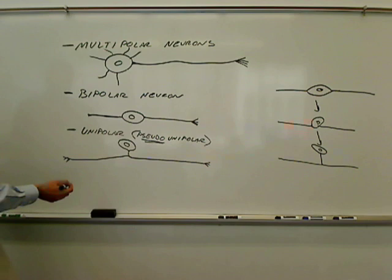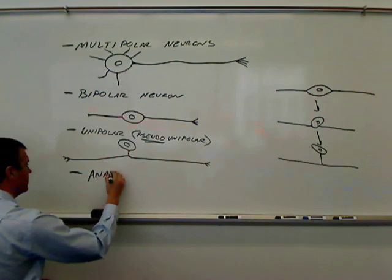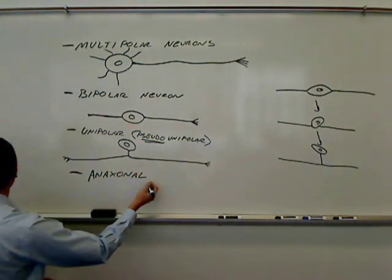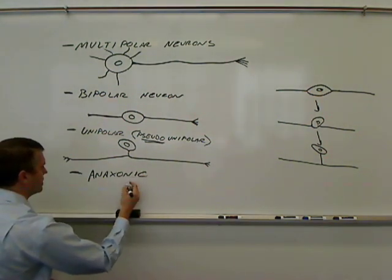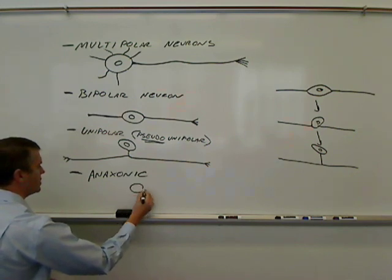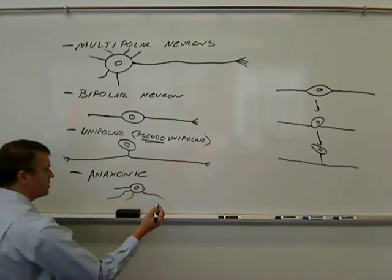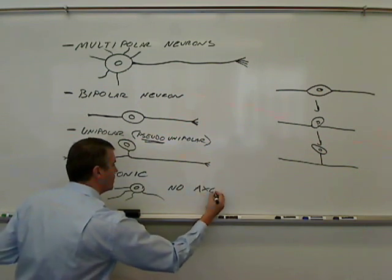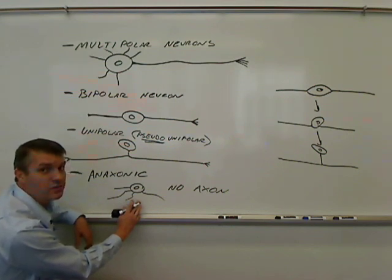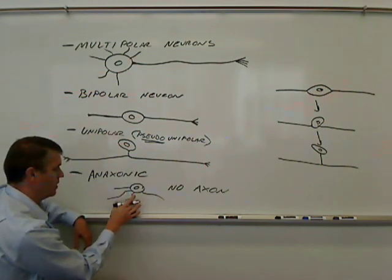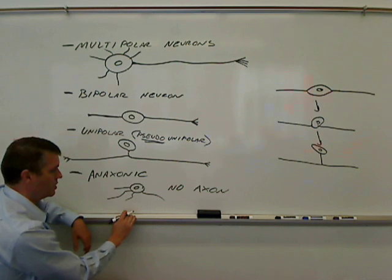And then the last type that I'll talk about are anoxonic. These cells have a cell body, and they may have a few processes coming out. The key to this is there's no axon, which means this little neuron is not capable of producing action potentials. The entire cell undergoes local potentials or graded potentials, but it doesn't have an axon to send out action potentials.